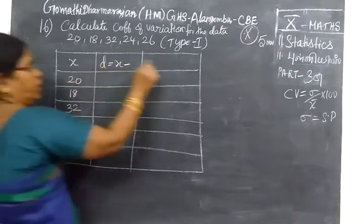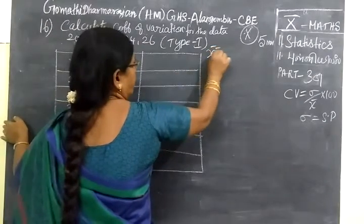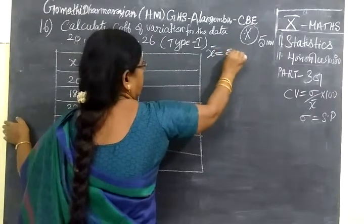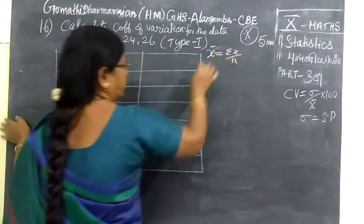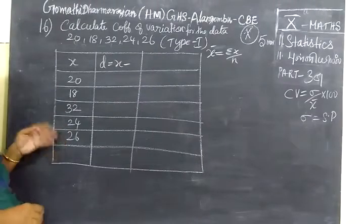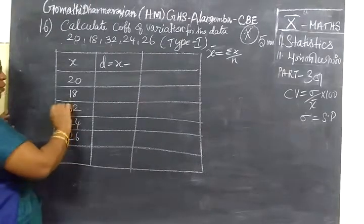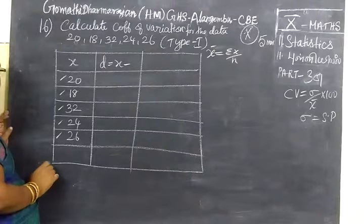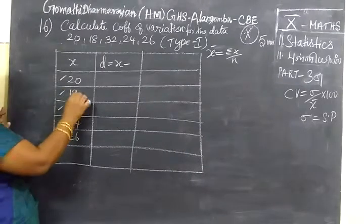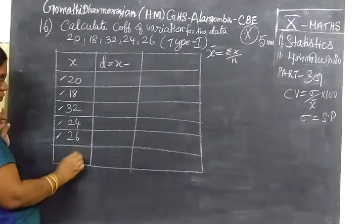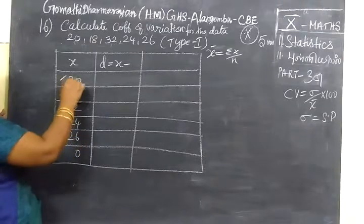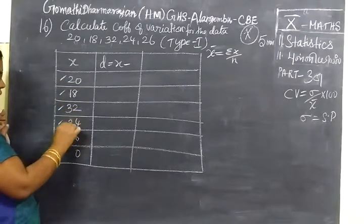First we find x bar. x bar equal to sigma x by n. That means you are adding the given value and divided by number of terms. 1, 2, 3, 4, 5 and divided by 5. So if you add 8 plus 2, 10 then 20. Balance 2, 4, 5, 8, 10, 120.